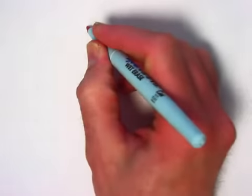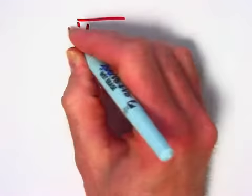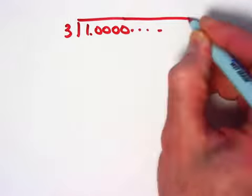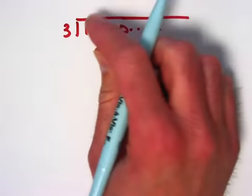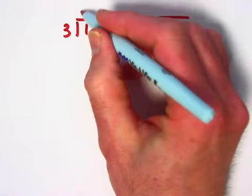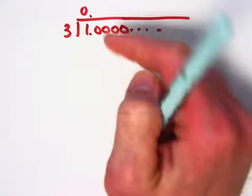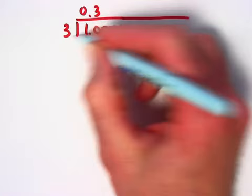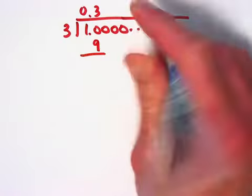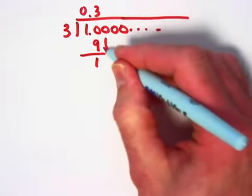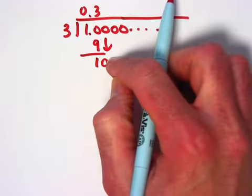If I take one and divide it by three, let the zeros for the one go on forever and ever. Put the decimal up there directly above that one. Three doesn't go into one, so I have a zero in front of the decimal. Three does go into ten three times. Three times three is nine. Ten minus nine is one. Bring down that zero, I get another ten.